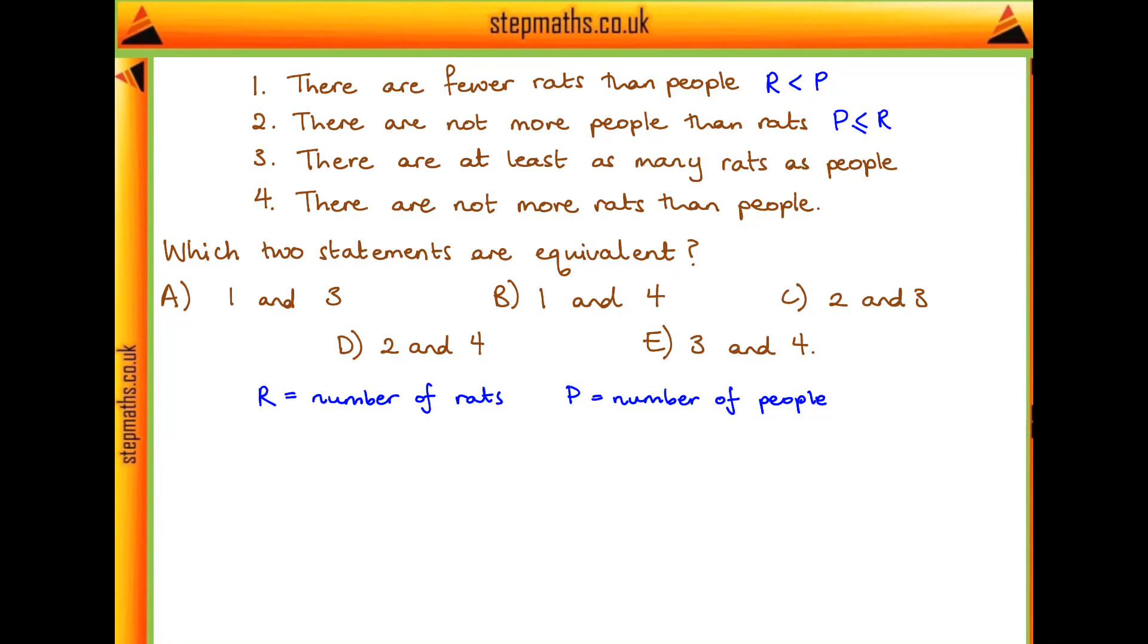And statement three says there are at least as many rats as people. So if it's at least as many, then the number of rats is going to be greater than or equal to the number of people.